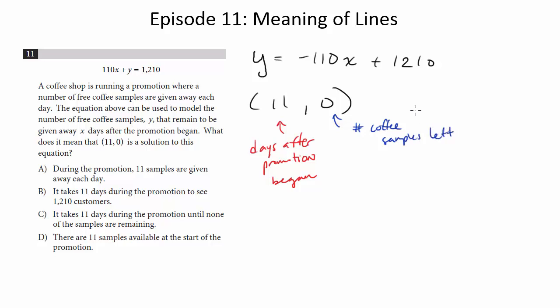So if we were to then figure out what this point represents without looking at the choices, it's saying after 11 days, they are out of coffee samples to give out.